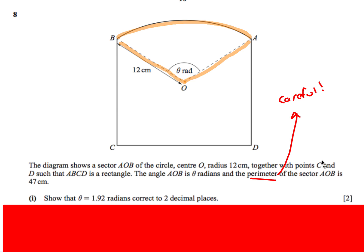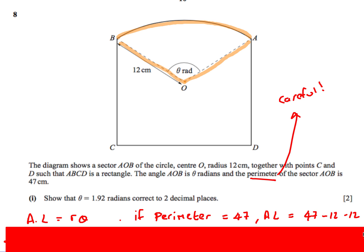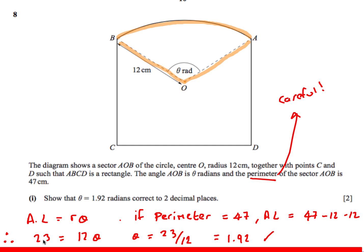The last question — be careful here. We're looking at the perimeter of sector AOB, which is 47. Since both radii are 12, the arc length is 47 − 12 − 12 = 23. Using arc length = rθ: 23 = 12θ, so θ = 23/12 = 1.92 to two decimal places.